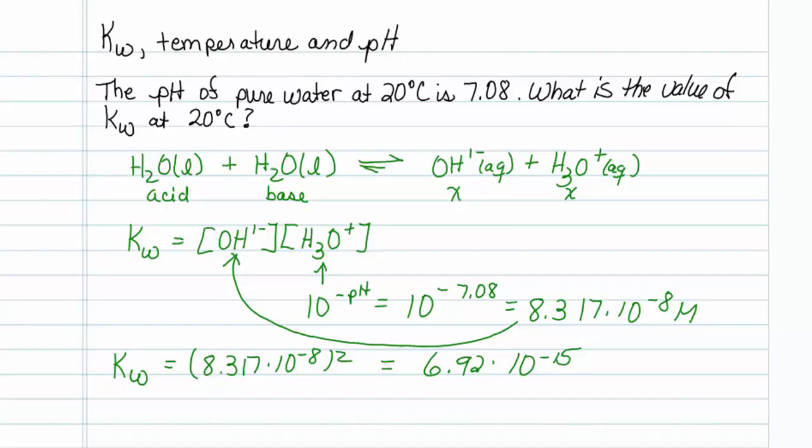So that's how you figure out kW of water at different temperatures if you know the pH. And that's kind of funky, because when water gets colder, it appears to get a little more basic.